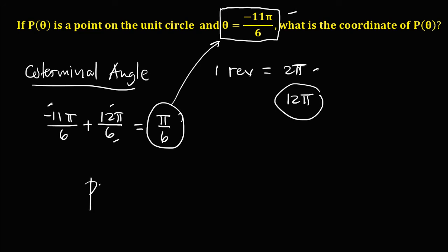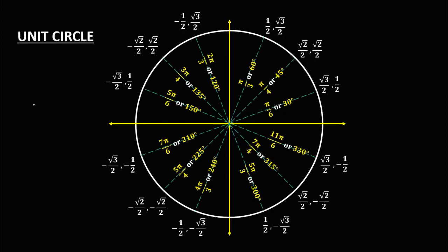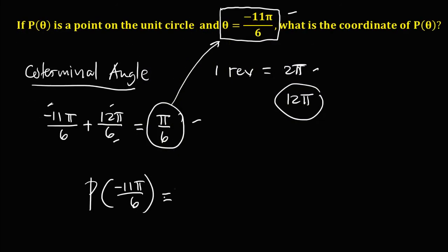To find the coordinate of −11π/6, we use the coterminal angle π/6. From the unit circle, π/6 equals 30 degrees, and the coordinate at that point is (√3/2, 1/2). Therefore, the coordinates of −11π/6 are (√3/2, 1/2).